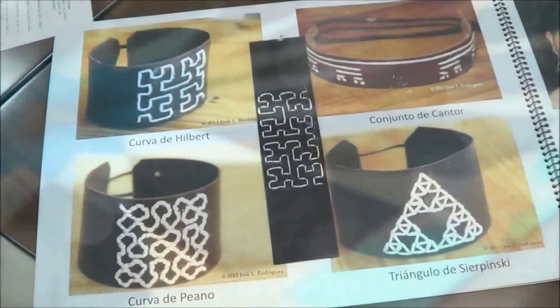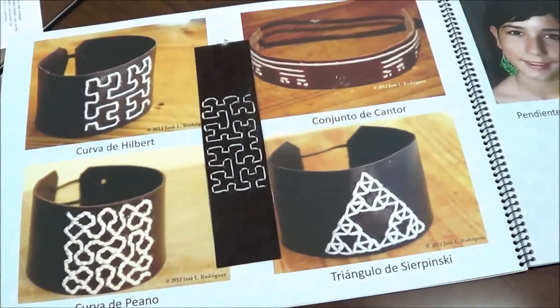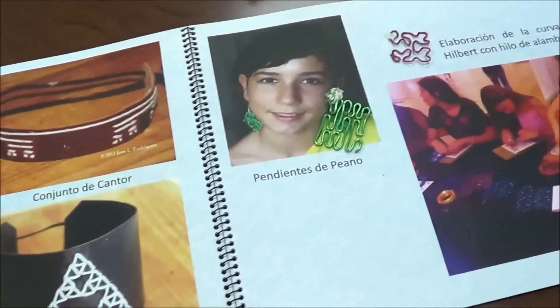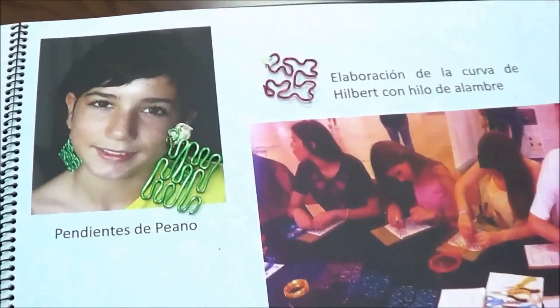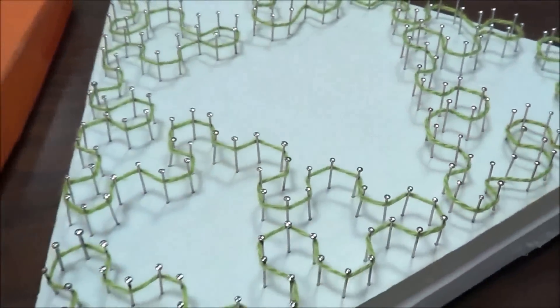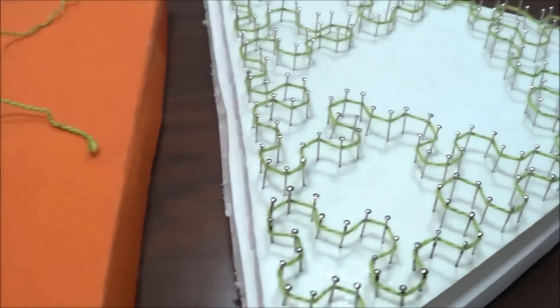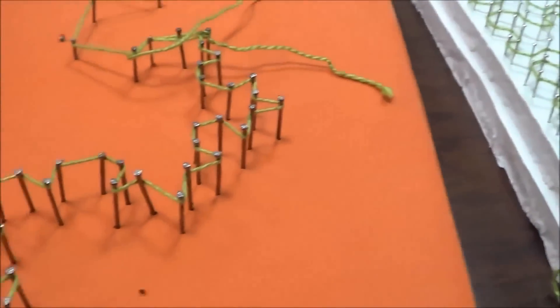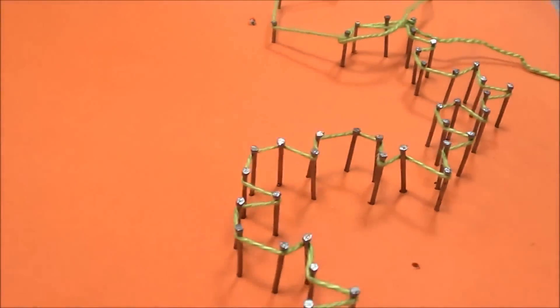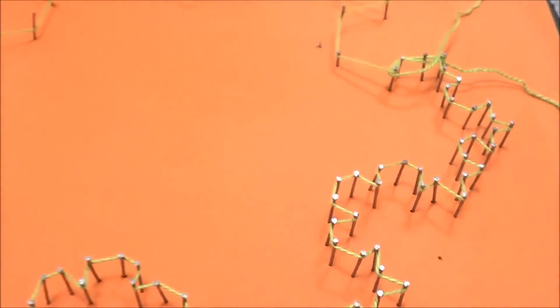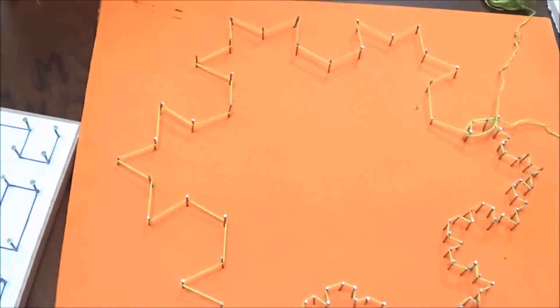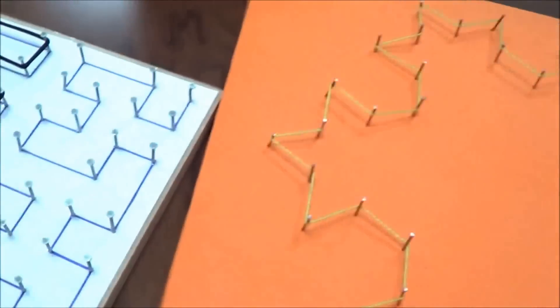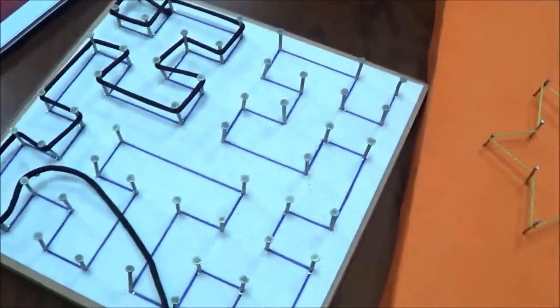Bracelets, earrings, and pendants can also have fractal shapes. Among other activities, students can play with fractal curves using threads on wooden boards. Sierpinski Curve, Koch Island, and Hilbert Curve are just some examples.